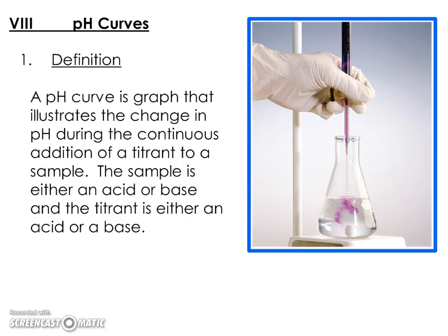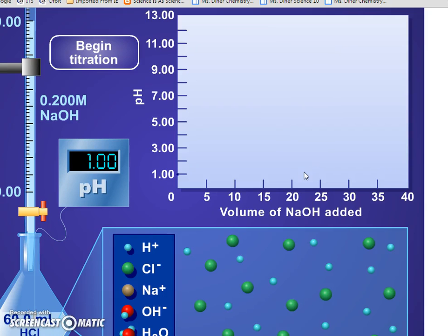We're going to look at a simulation that shows a pH curve being developed. Over here we've got hydrochloric acid in the Erlenmeyer flask, and we're going to be titrating with sodium hydroxide. In this situation there is no indicator, so the change in pH is going to indicate that the reaction is complete.